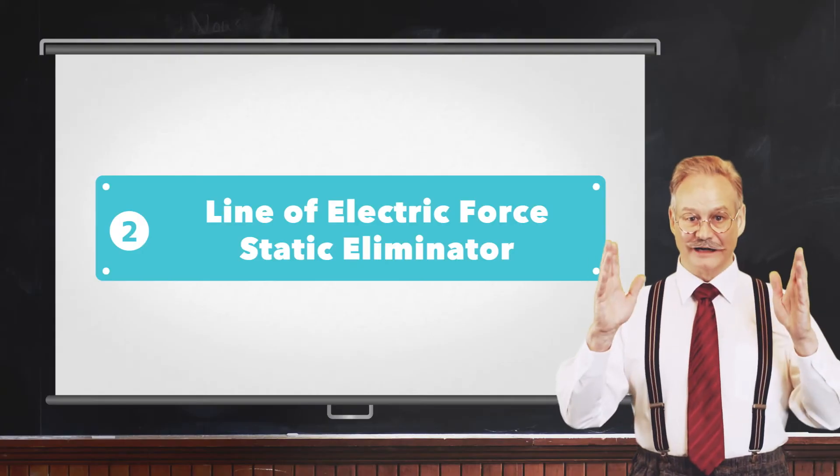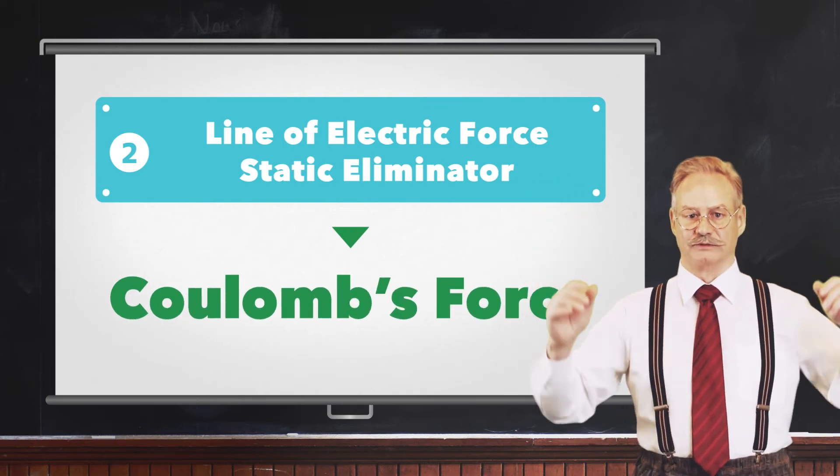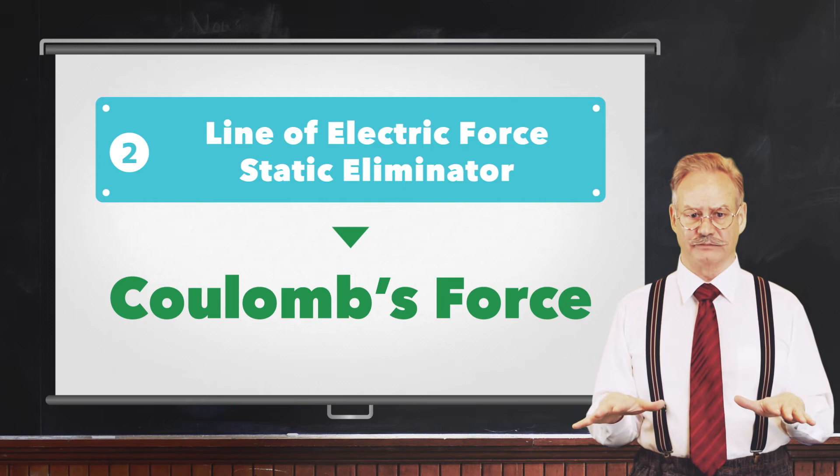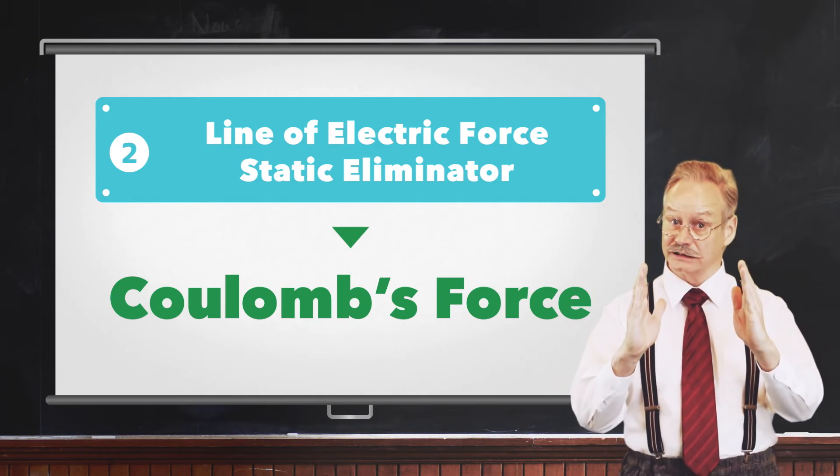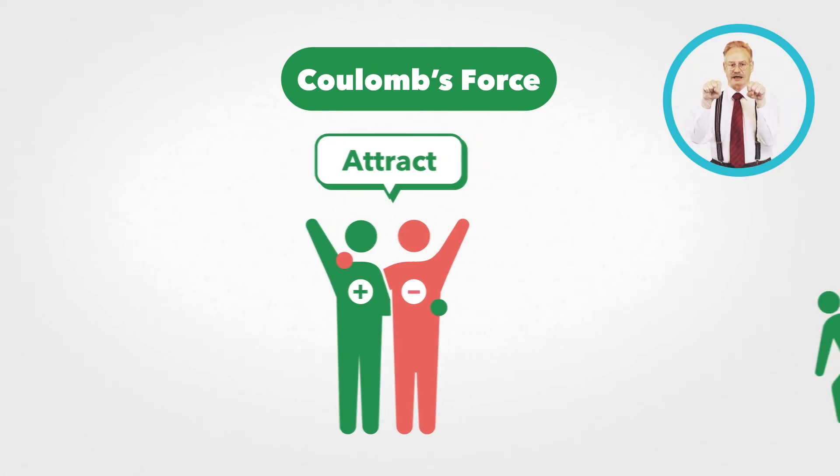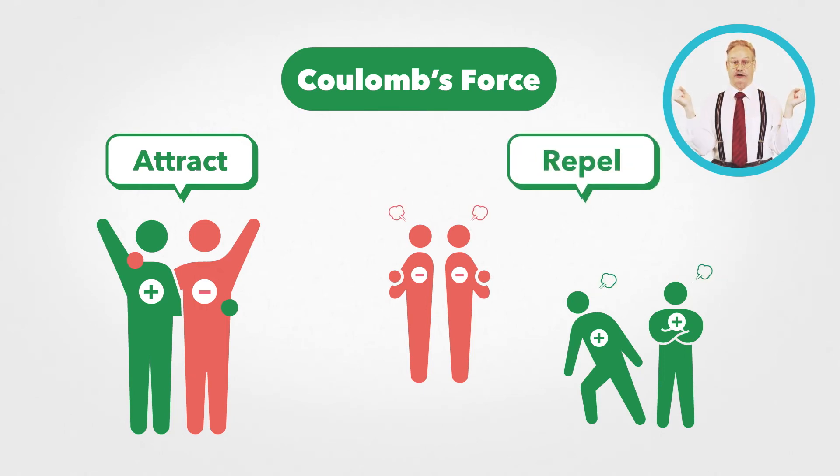A line of electric force static eliminator uses Coulomb's force, and suppresses static electricity problems using electrical lines of force. Coulomb's force is the phenomenon that causes positively charged objects to attract negatively charged objects, and objects with the same charge to repel each other.